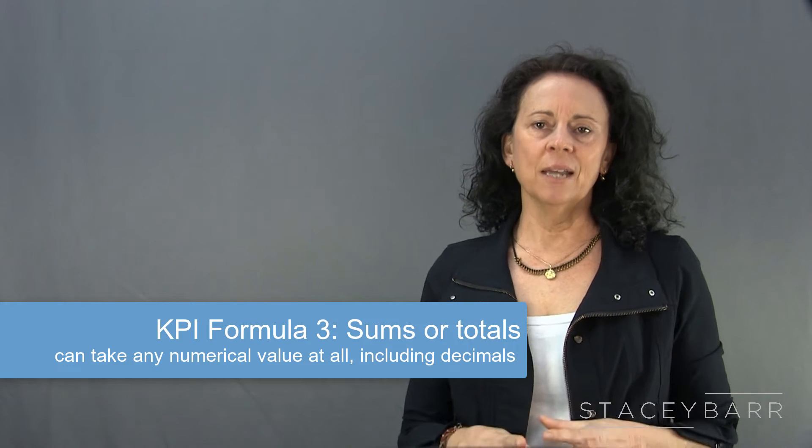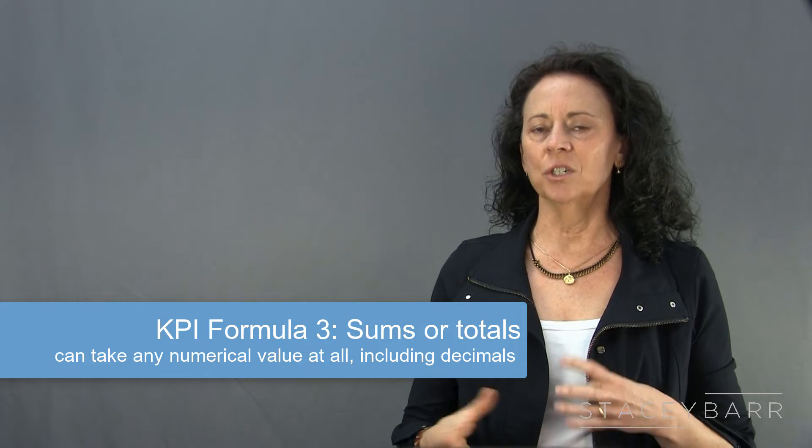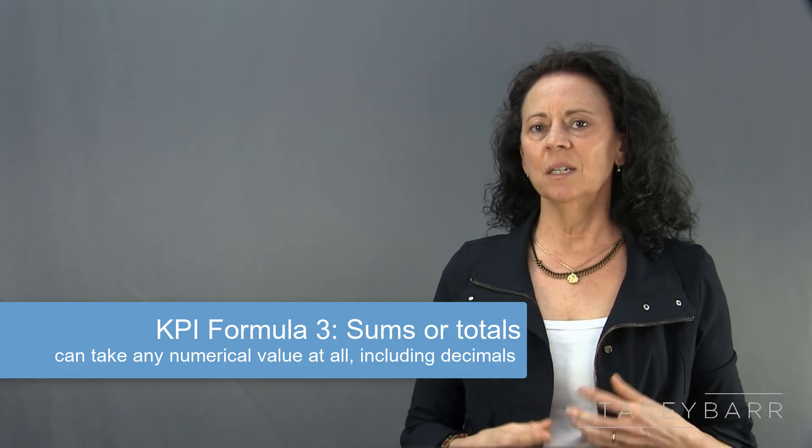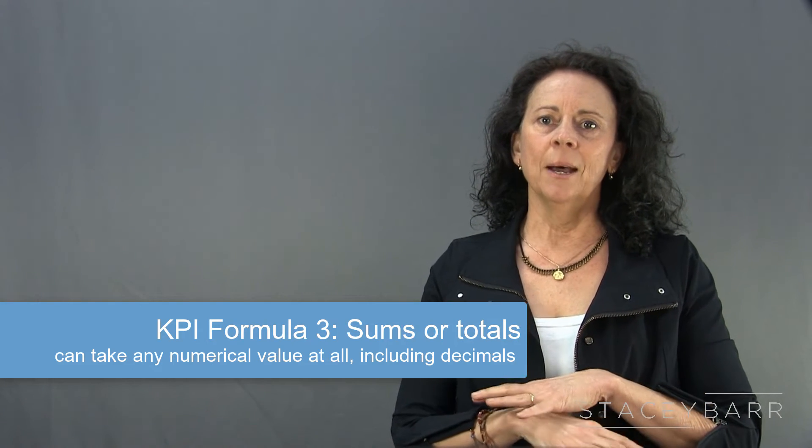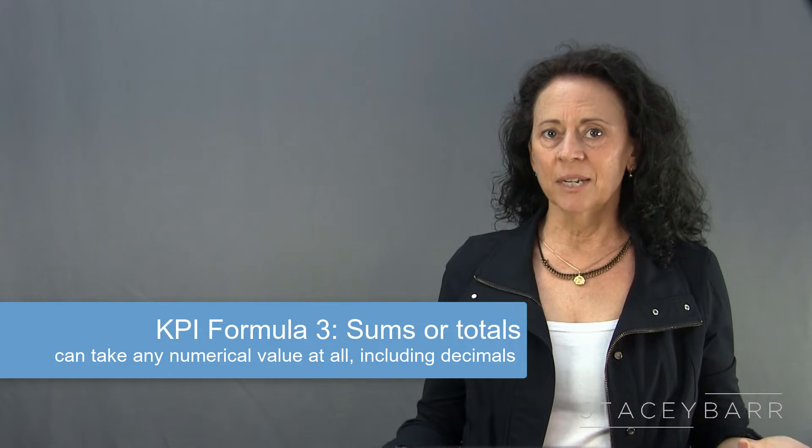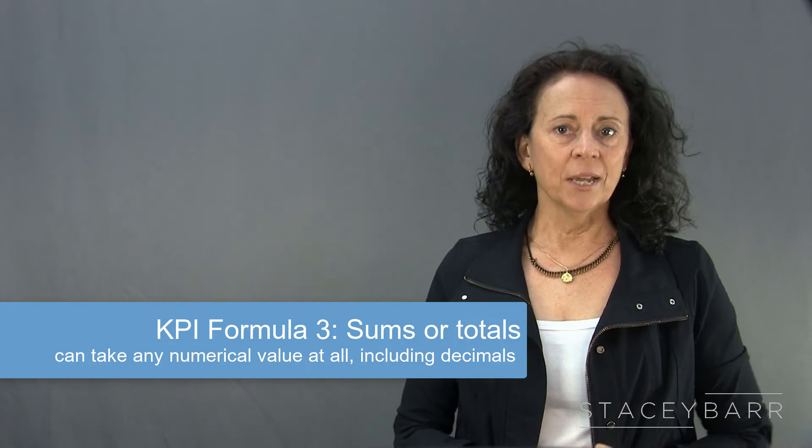Basic KPI formula number three is the sum or the total. Where counts are usually considered discrete measures because their values can only be integers or whole numbers, sums or totals are generally considered to be continuous measures because their values can take any numerical value at all, including decimals. For example: the total time spent making sales calls, the total sales revenue invoiced, or the total distance travelled. Similar to count, sums and totals can be misleading if the size or scope or opportunity varies over time. So if the total time spent making sales calls in both May and June is 45.25 hours, but the total number of sales calls in May is twice that of June, you'd probably assess performance differently.